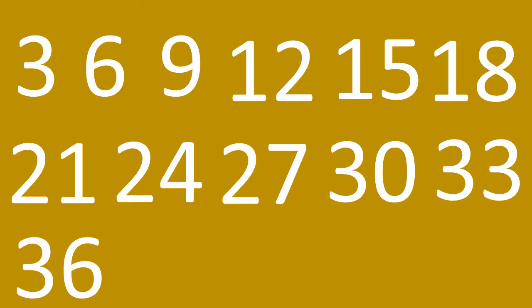We're going to begin with counting in threes: three, six, nine, twelve, fifteen, eighteen, twenty-one, twenty-four, twenty-seven, thirty, thirty-three, thirty-six. Let's do that again: three, six, nine, twelve, fifteen, eighteen, twenty-one, twenty-four, twenty-seven, thirty, thirty-three, thirty-six.